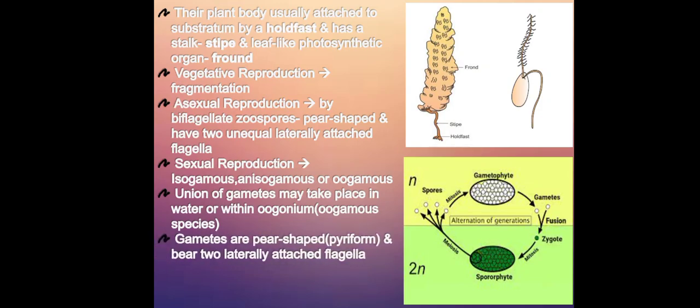Their gametes are pear-shaped or pyriform. The pear-shaped form is known as pyriform and bears two laterally attached flagella. Some examples of brown algae or Phaeophyceae are Ectocarpus, Dictyota, Laminaria, Sargassum, and Fucus.